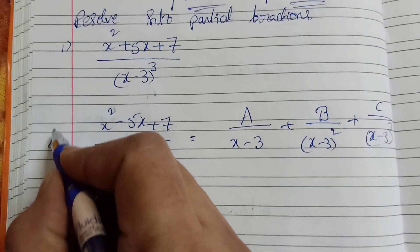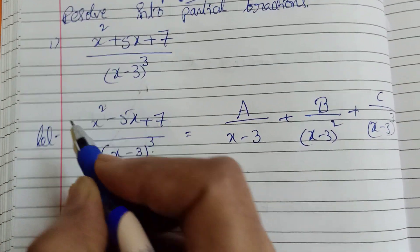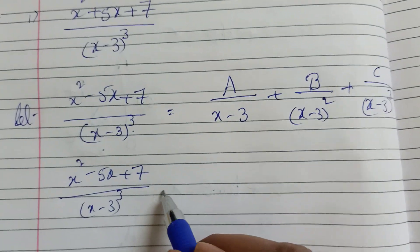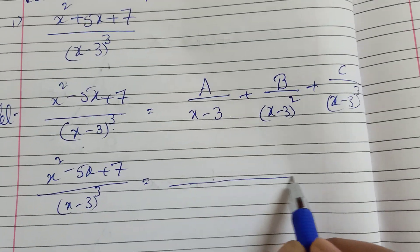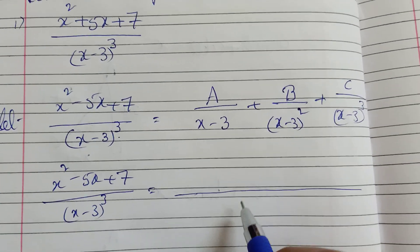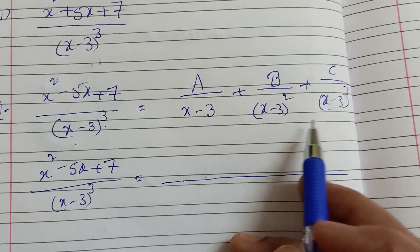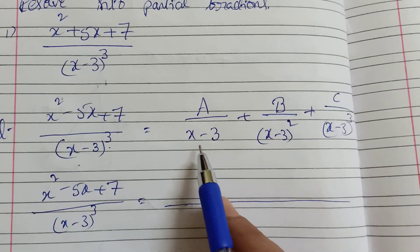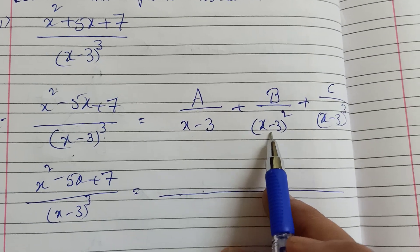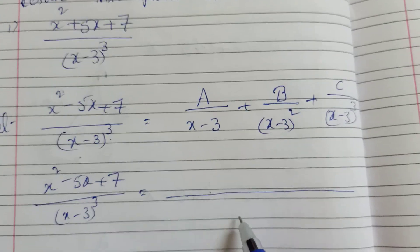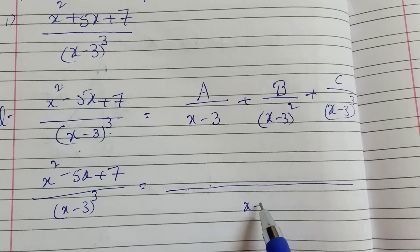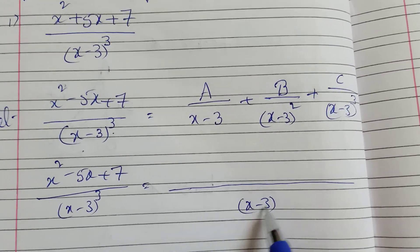Now, taking LCM. The LCM of (x minus 3), (x minus 3) whole square, and (x minus 3) whole cube is just (x minus 3) whole cube.